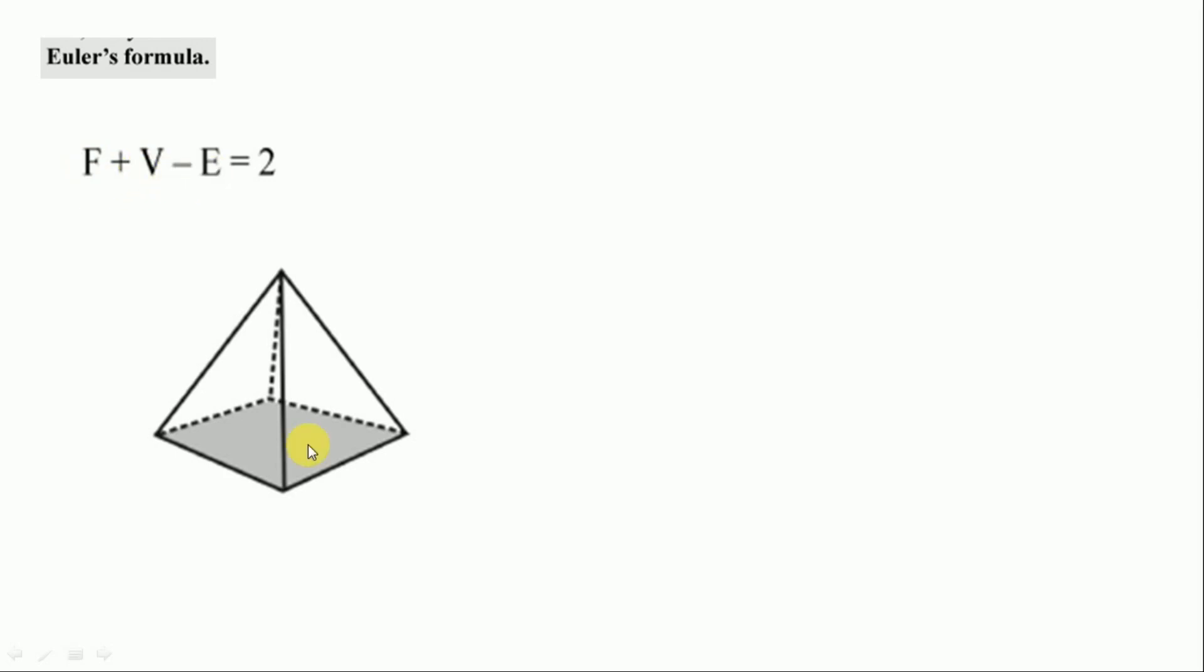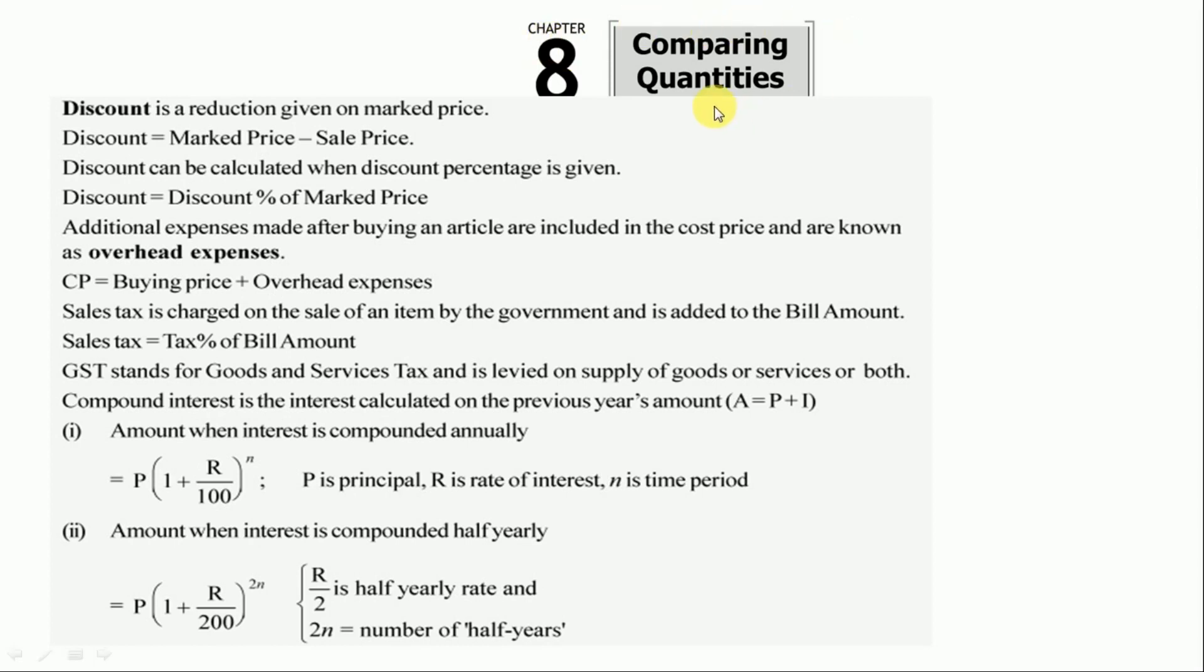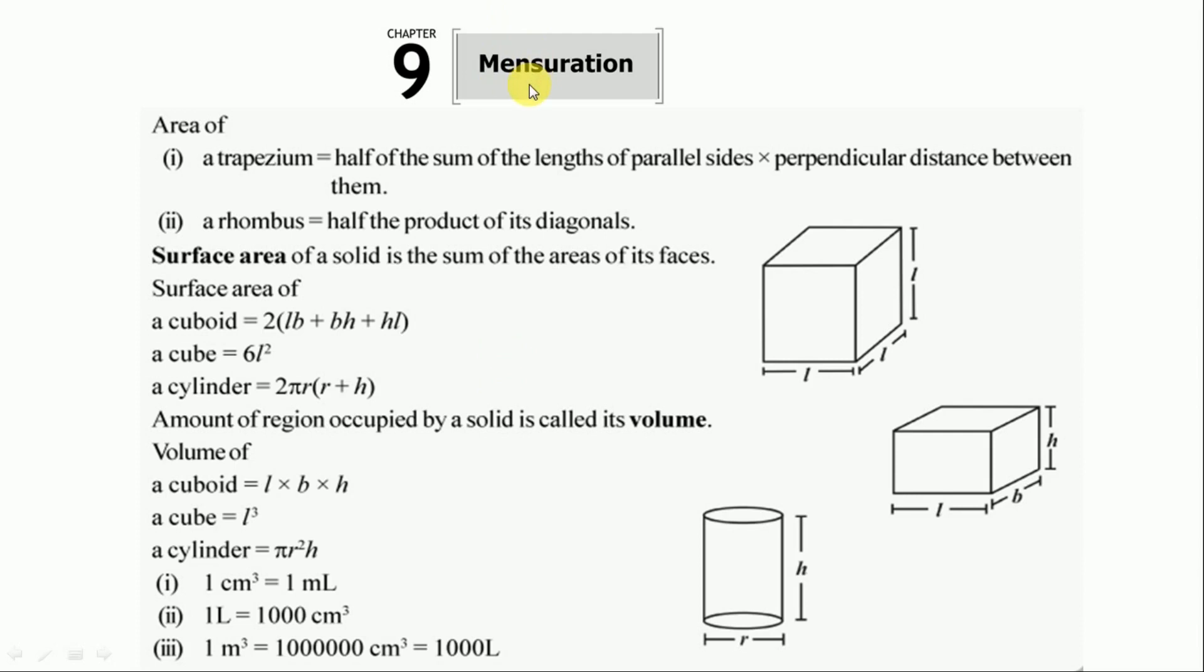Let's move to next one. Chapter 8, comparing quantities - all important points are given. Next is mensuration. In mensuration, the area, surface area, and the total area and the volume of cylinders, cuboid, and cube is important. All formulas are given here. Here we tried to give all important points for the preparation of oral exam. Thanks for watching.